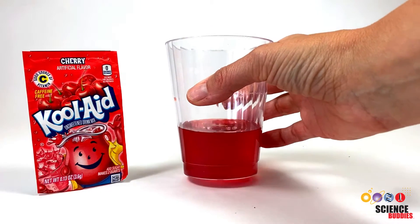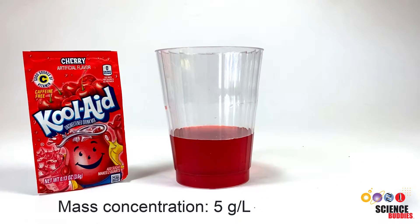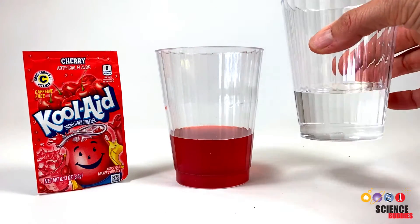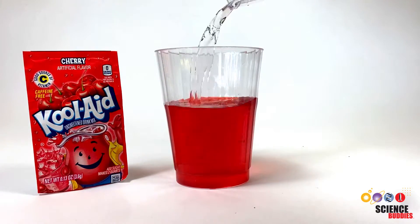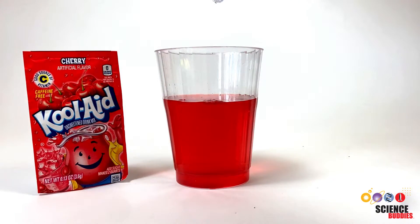Here I have a Kool-Aid solution with a mass concentration of 5 grams per liter. By adding more solvent or water to the Kool-Aid solution, I am reducing the concentration of the Kool-Aid, which you can see as the color of the solution lightens.